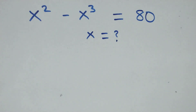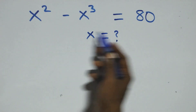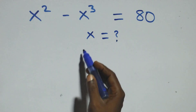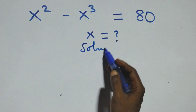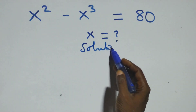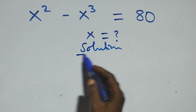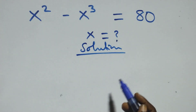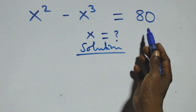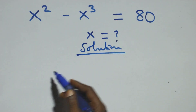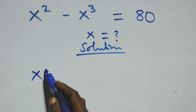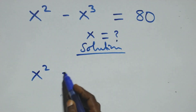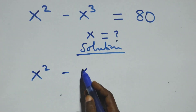Hello, you are welcome. How to solve this nice algebra equation. From here, what we have: we take 80 to the left hand side, that is we have x squared minus...